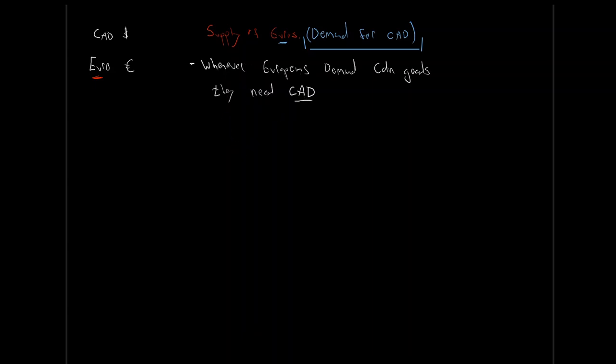Whenever Europeans want Canadian stuff, they are offering up their currency — euros — saying: here, I'll give you euros if you give me Canadian dollars, so I can buy Canadian things. The supply of foreign exchange, or inversely the demand for Canadian dollars, is going to rise from Canada's sale of goods, services, and assets to the world. The supply of euros is determined by our Canadian exports — the more goods and services we sell to Europe, the more euros are supplied.